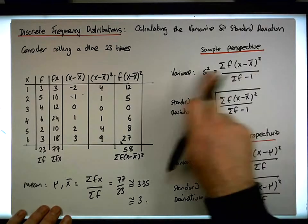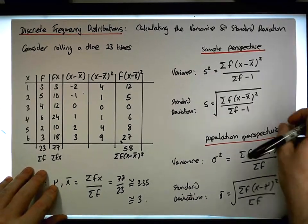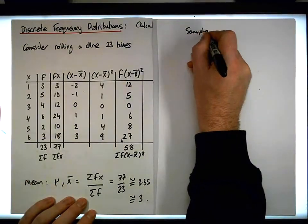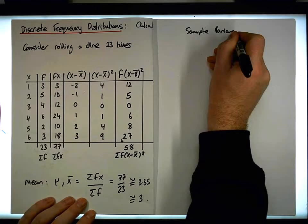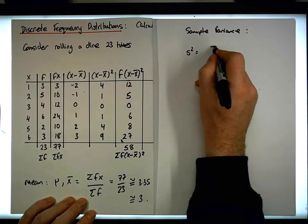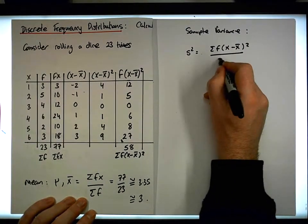So now we can calculate the variance. Let me just maybe just move this across here. So once again, let's just do the sample variance really quickly. So now we have the sample variance. Well, the sample variance, s squared, is the sum of the frequencies times the x minus the x bar squared divided by the sum of the frequencies minus 1.